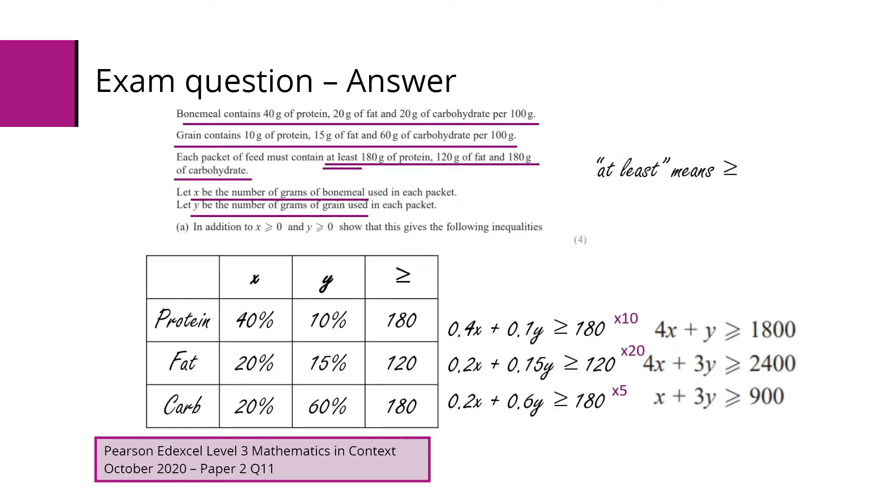Okay, so for part A we can see that the bone meal contains 40 grams of protein, 20 grams of fat, 20 grams of carbohydrate per 100 grams. The grain contains 10 grams of protein, 15 grams of fat and 60 grams of carbohydrate per 100 grams. Each packet of feed must contain at least 180 grams of protein, 120 grams of fat and 180 grams of carbohydrate.